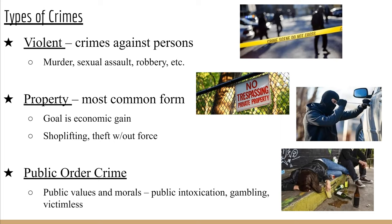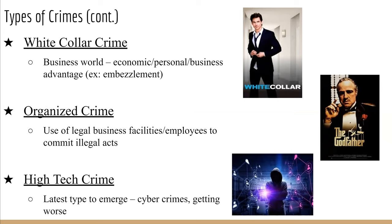Public order crimes basically go against public values — things like public intoxication, gambling, and prostitution. These are usually called victimless crimes. Then we have white collar crime: economic, business, or personal crimes. They're similar to property crimes, but because they typically deal with a different segment of the population — not stealing physical things, but dealing in information and embezzlement — they have their own category.